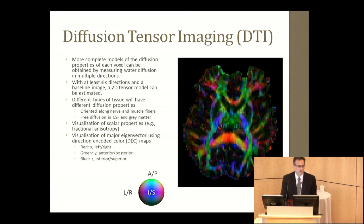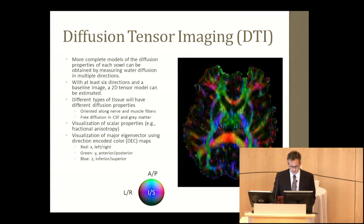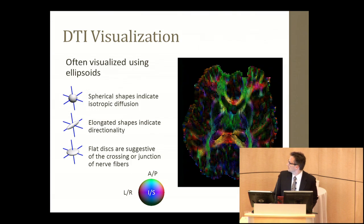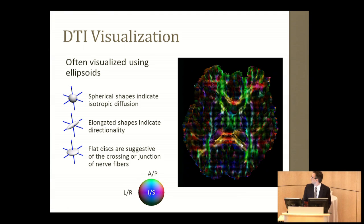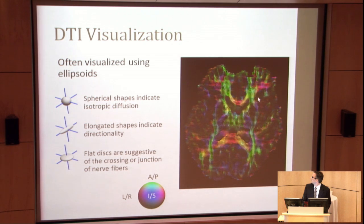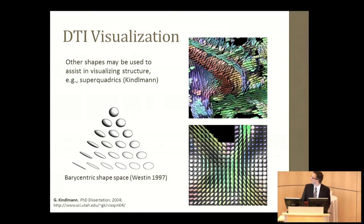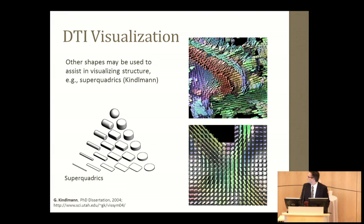We can get a much better picture of the white matter in the image. However, this only displays the information from a single vector of diffusion. So we can use more elaborate visualization techniques, such as displaying the tensors as ellipsoids, and now we can see much more clearly what's going on in these areas and the organization of the white matter tissue. There's also been some very visually appealing work done by people such as Gordon Kindlemann to visualize tensors in ways that enhance the perception of structure. He's moved from the tensor model to a superquadric model, which allows us to get a better visual interpretation of how the connectivity in the brain is organized.